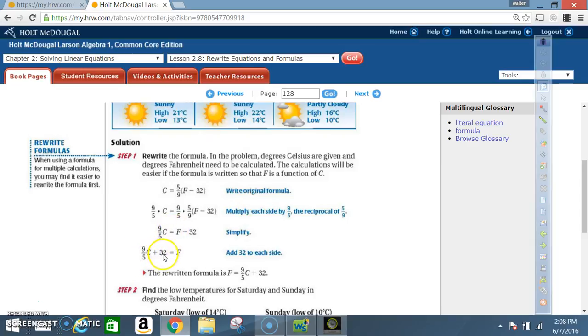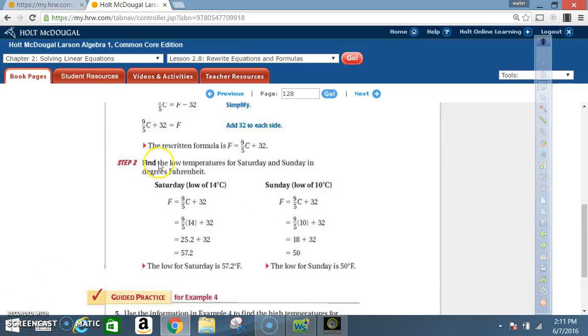F is equal to 9 over 5 C plus 32. So that's what we end up with. Fahrenheit is equal to 32 plus 9 over 5 times C. The rewritten formula is F equals 9 over 5 times C plus 32. Step 2, find the low temperatures for Saturday and Sunday in degrees Fahrenheit.